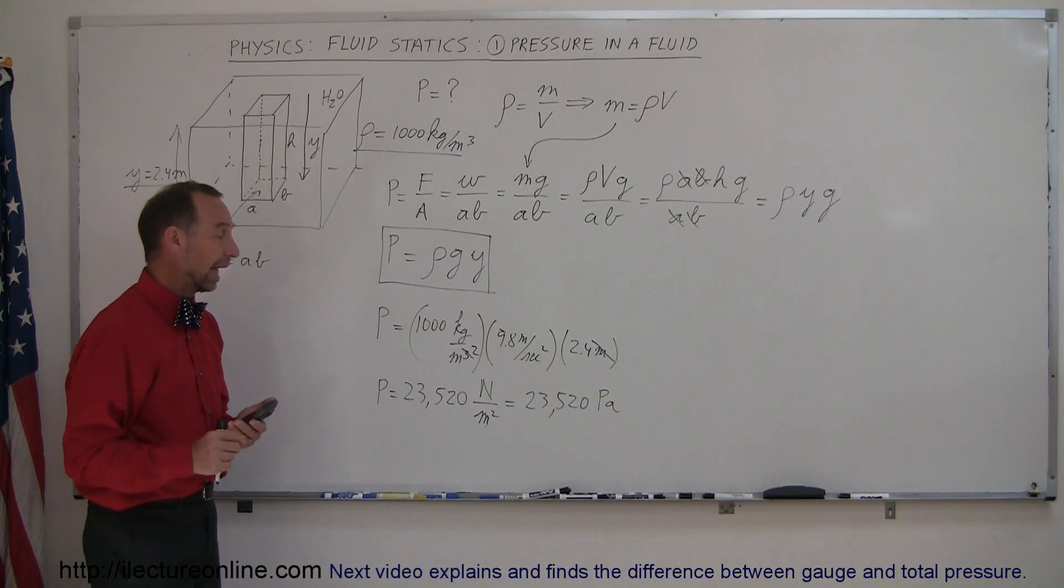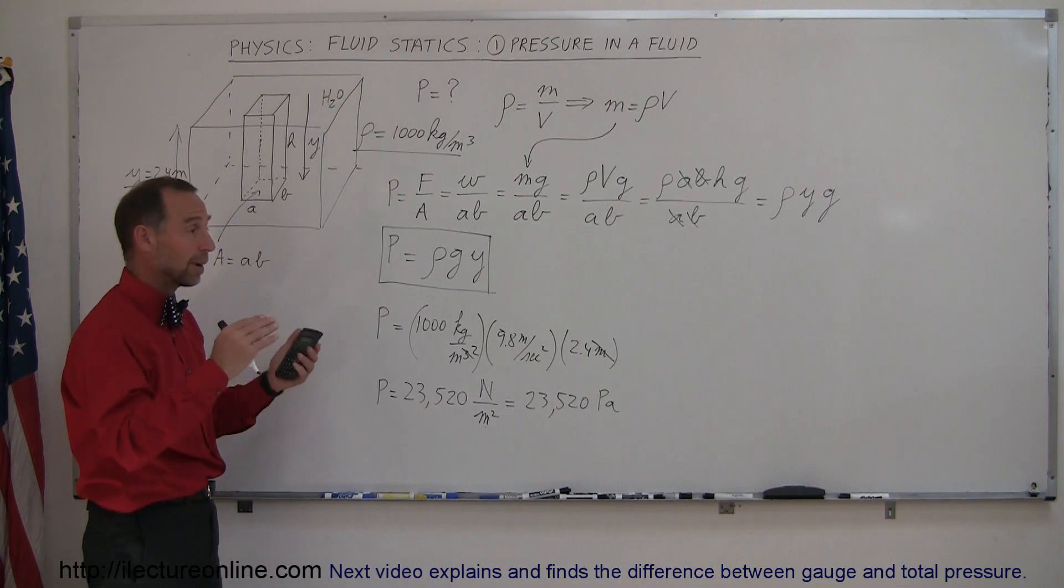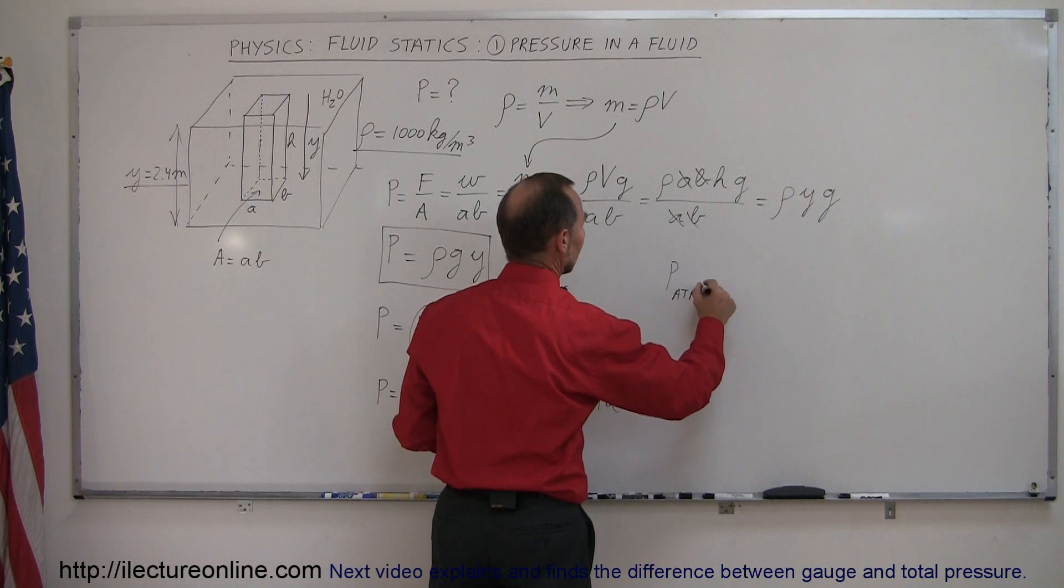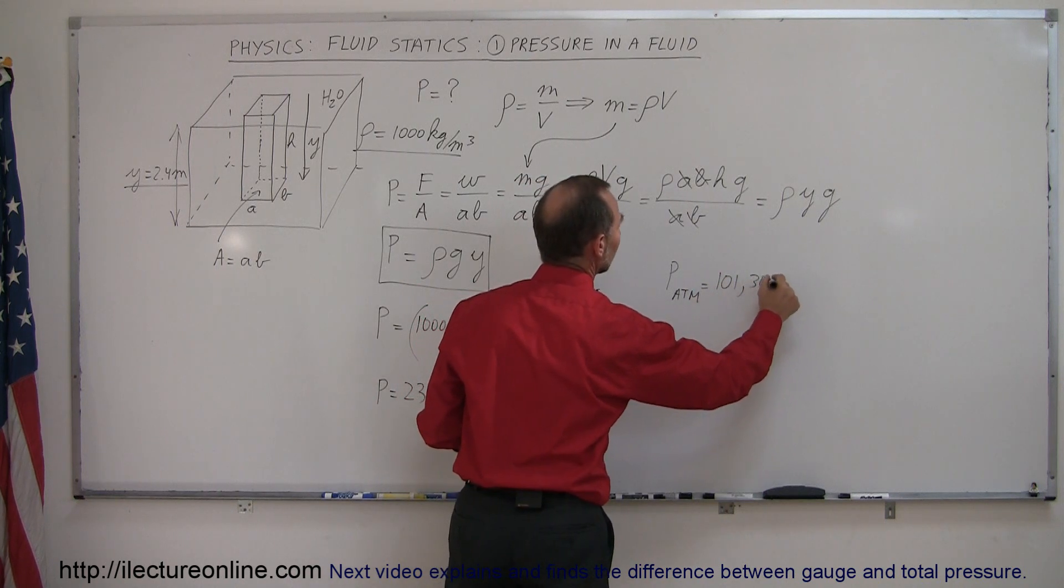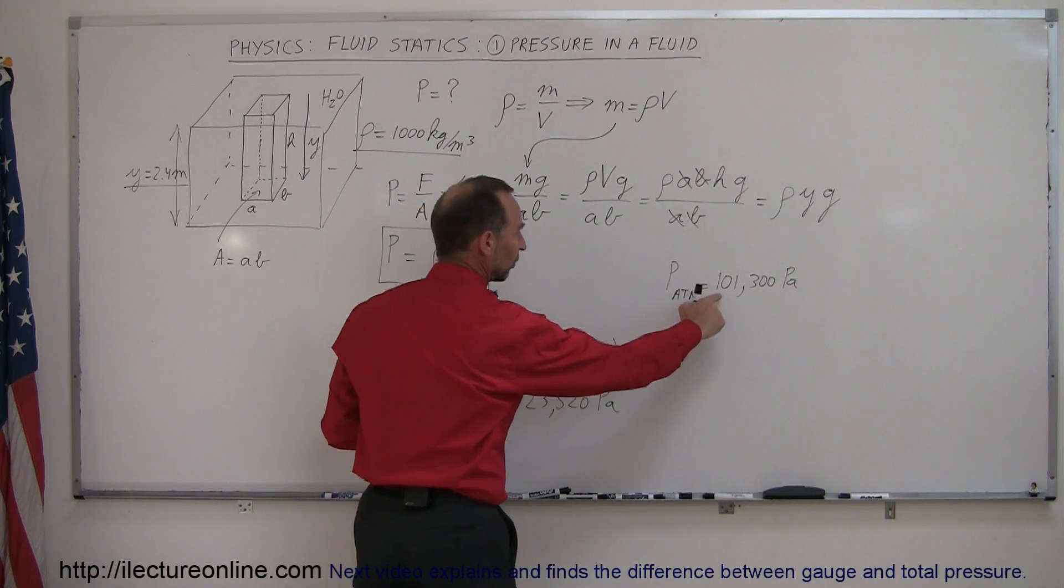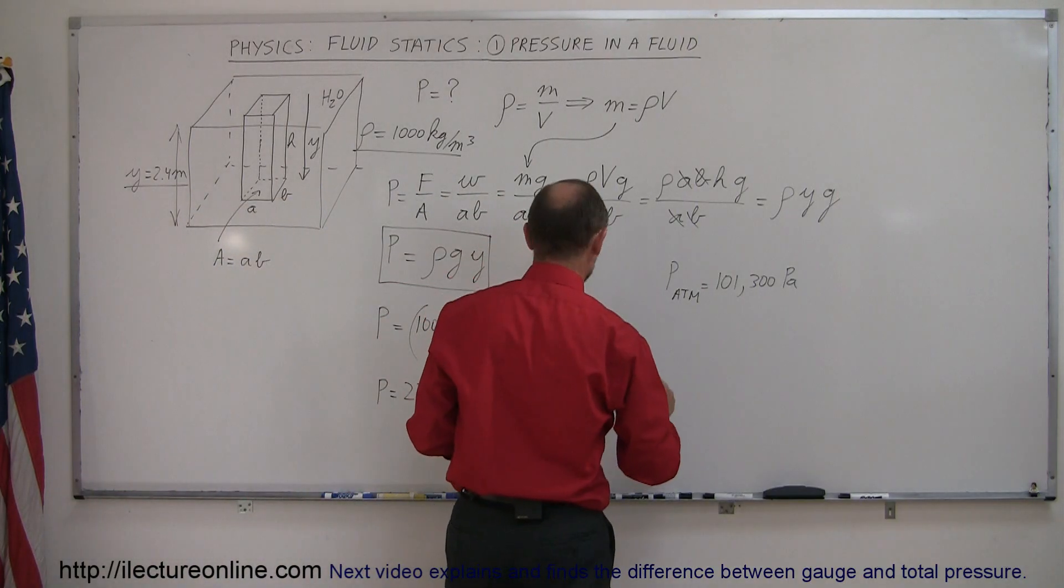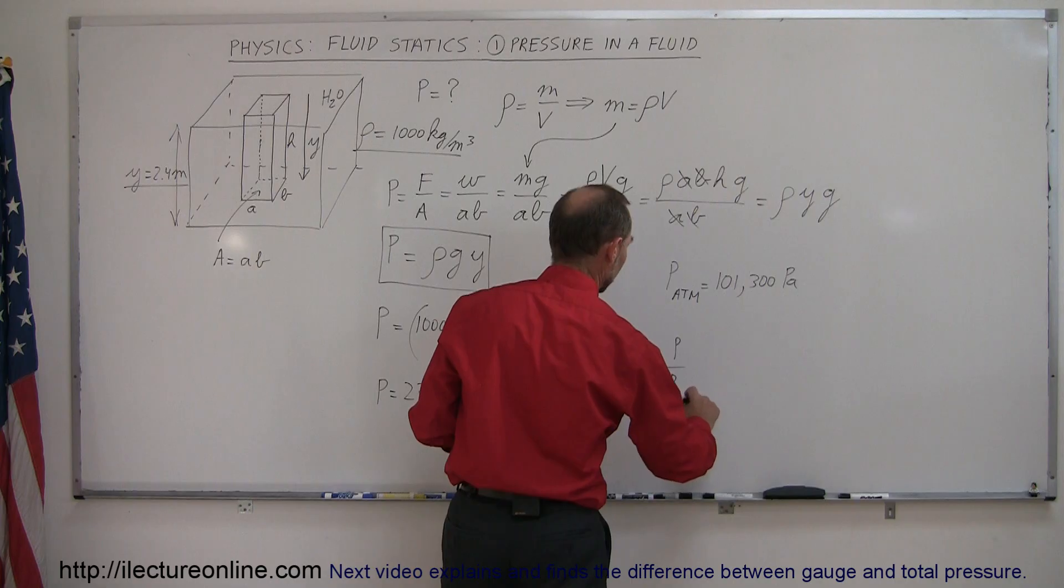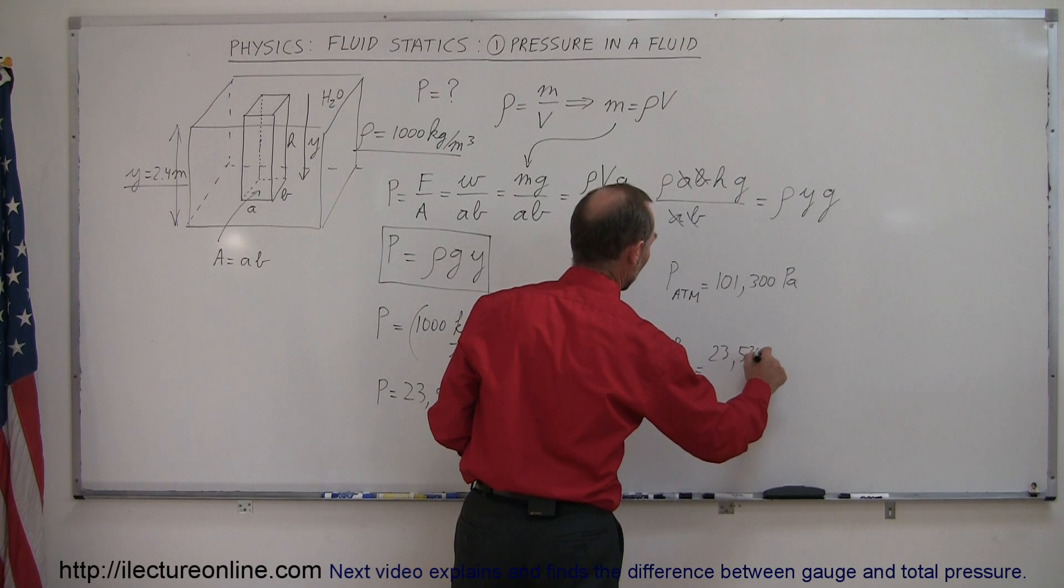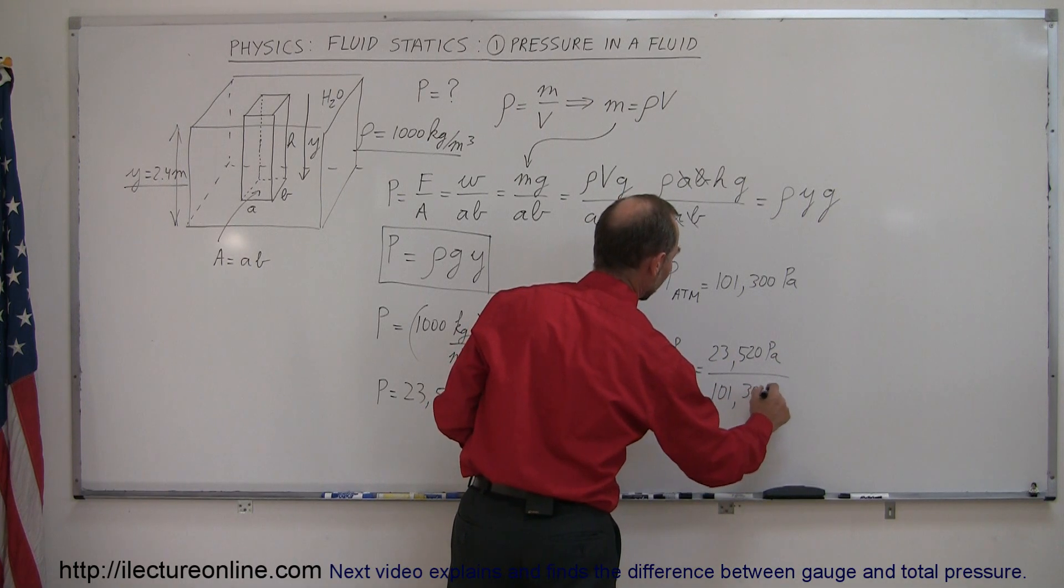Now, how much pressure is that? Looks like a big number. But if we compare that to atmospheric pressure, which is the pressure caused by the atmosphere, which is known to be P atmosphere, is equal to 101,300 newtons per square meter or pascals, then you can see that this is just a fraction of a little bit less than 25%. So let's figure out what fraction of atmospheric pressure it is. So P divided by P atmosphere is equal to 23,520 pascals divided by atmospheric pressure, which is 101,300 pascals.